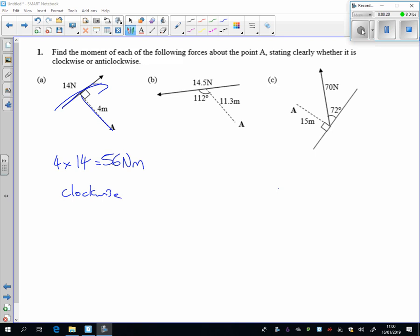Now we can't just times these ones together though, because they're not perpendicular here. We actually need to know the distance there to there. If I put that little angle in there, that distance over there is 11.3 times the sine of 68, and then I can times that by the 14.5.